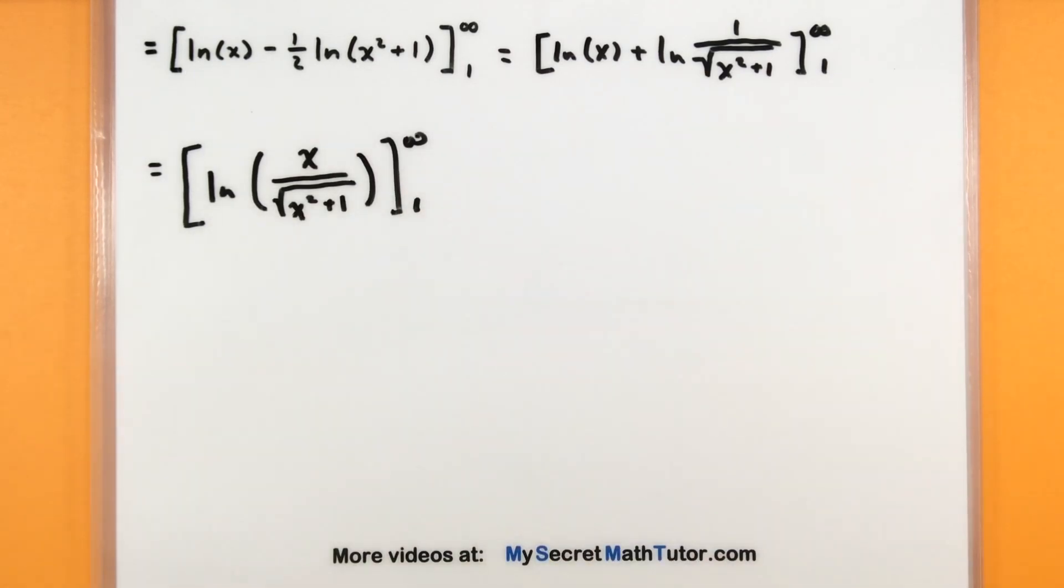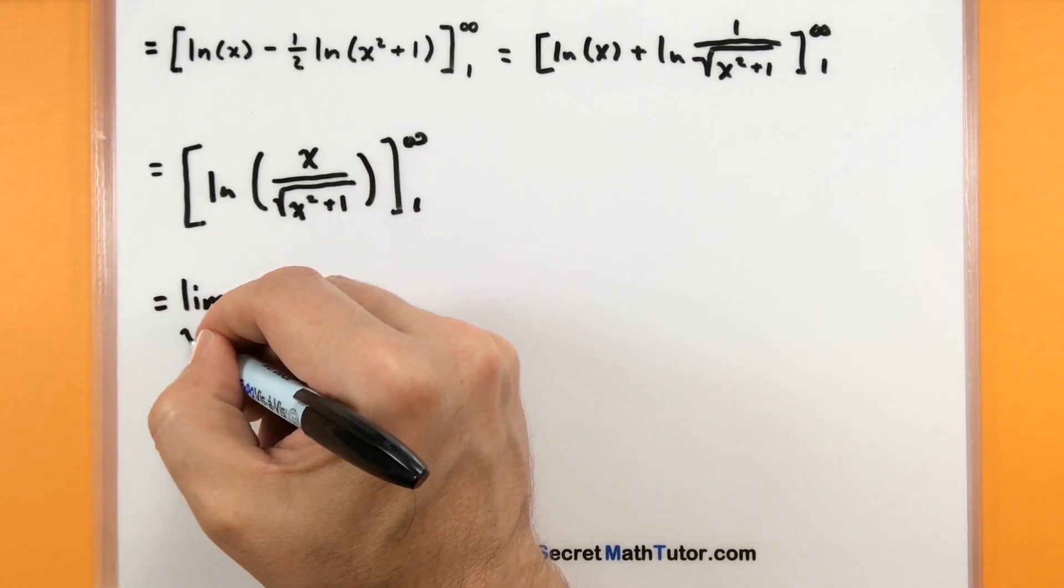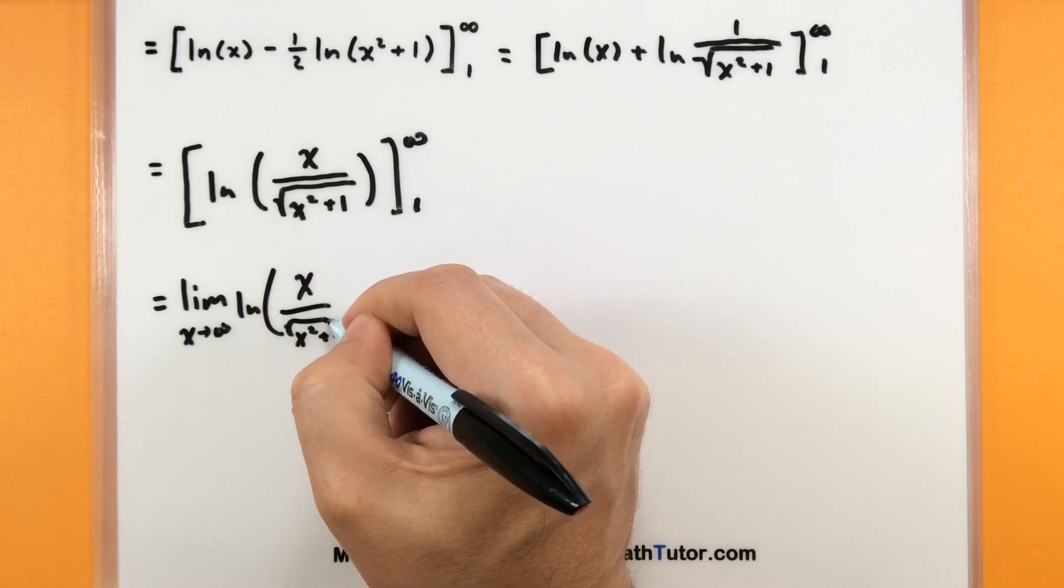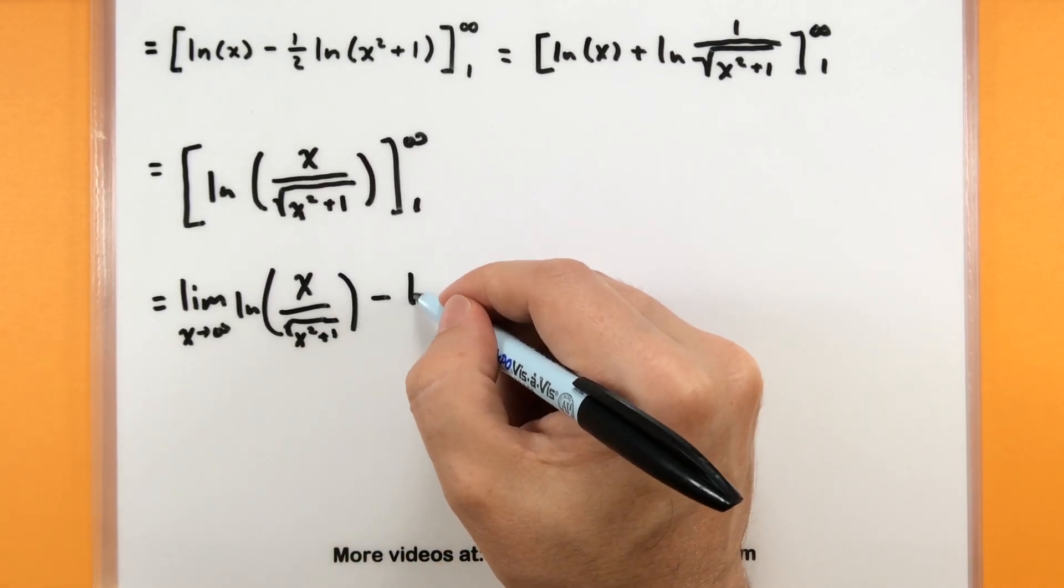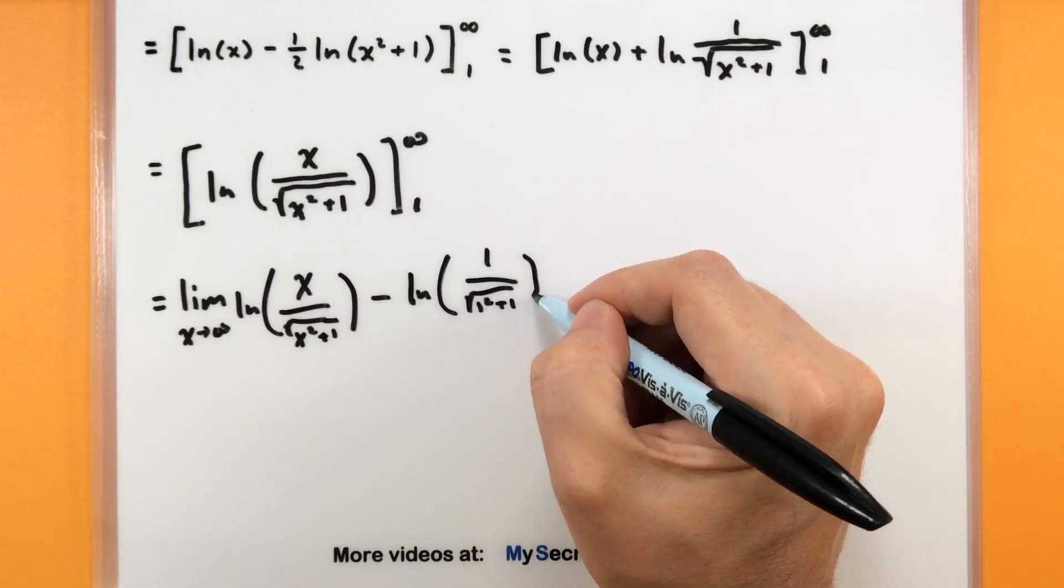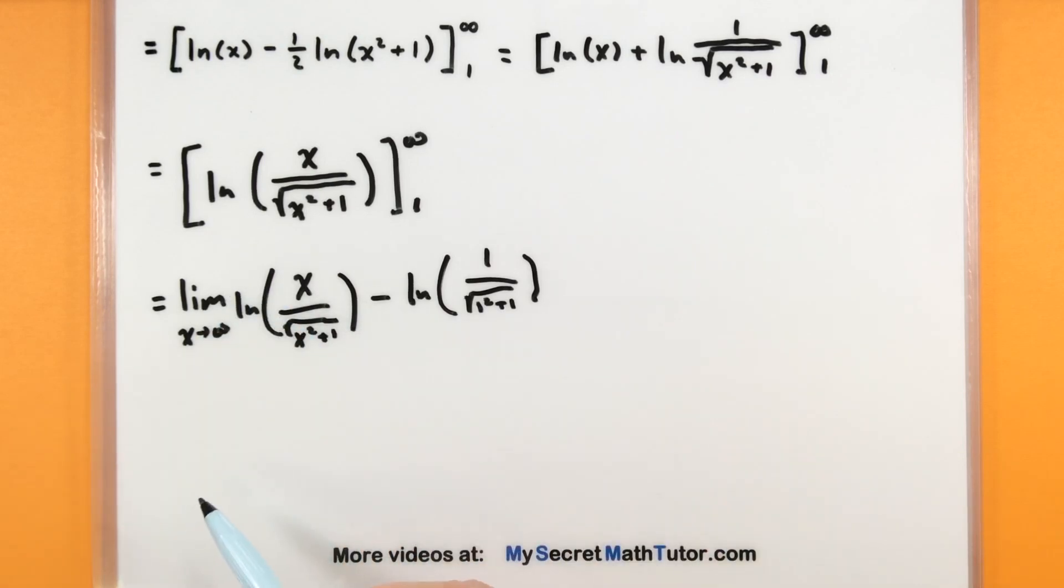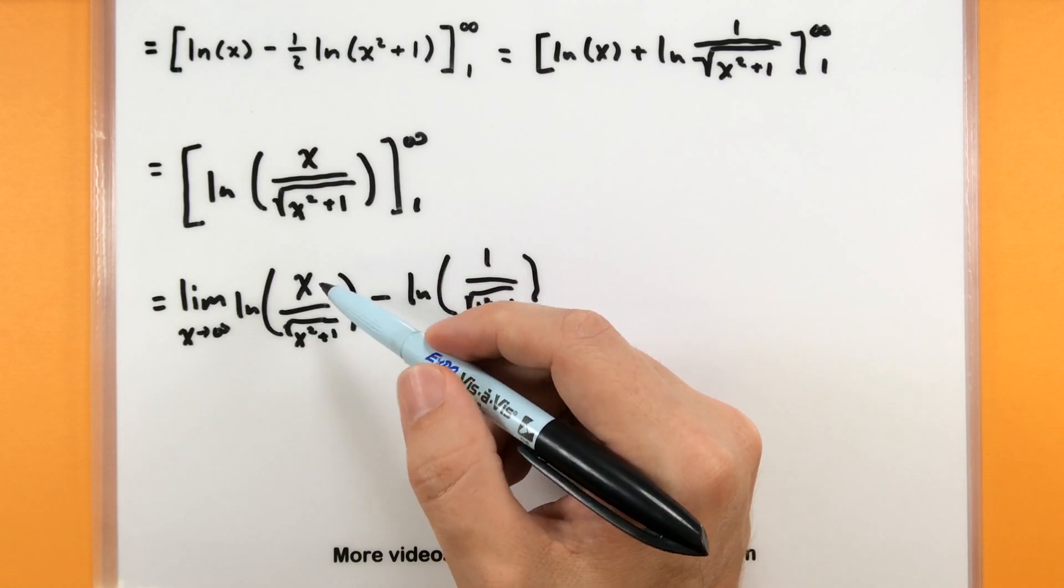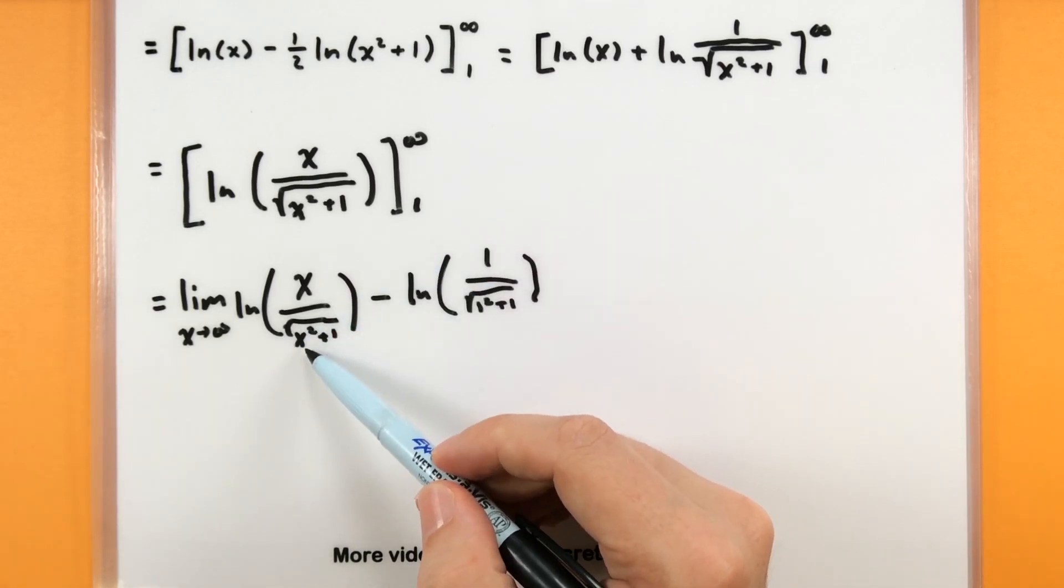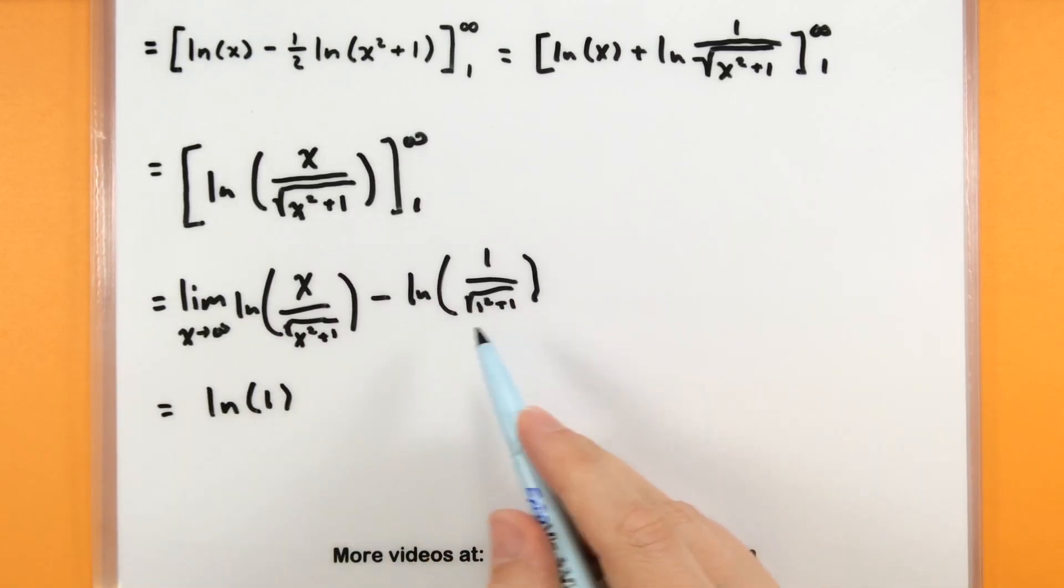I think we're finally ready to take on some limits. So we'll take care of the top bound and the bottom bound. Let's see what that gives us. So for the top, I'm looking at the limit as x goes to infinity of the natural log of x over the square root of x squared plus one. All that's underneath the square root. Minus. And this one's just a nice solid number so we can just plug in one. Square root of one squared plus one. So as x goes towards infinity, natural log is a continuous function so we can move that inside of the natural log. Using something like L'Hopital's we'll get that the top and bottom are essentially growing at the same rate. We can tell because of the square root and the x squared. So the inside here evaluating that limit, it just goes to one. So natural log of one. Here I'll get a minus natural log of one over the square root of two.